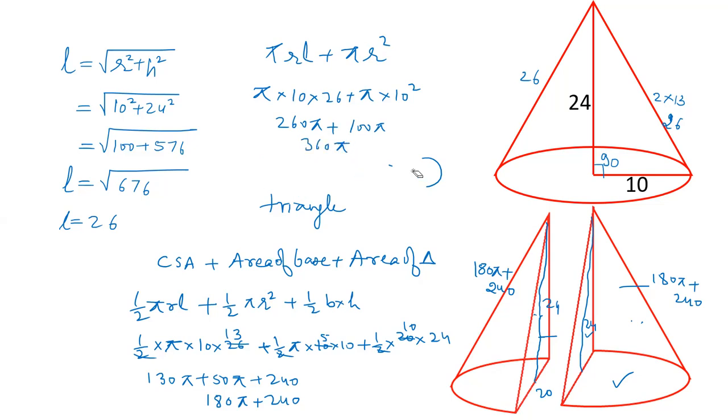The total surface area of original cone is 360 pi, while the area of two parts individually are 180 pi plus 240. So this 240 is the extra surface area that is the triangle.